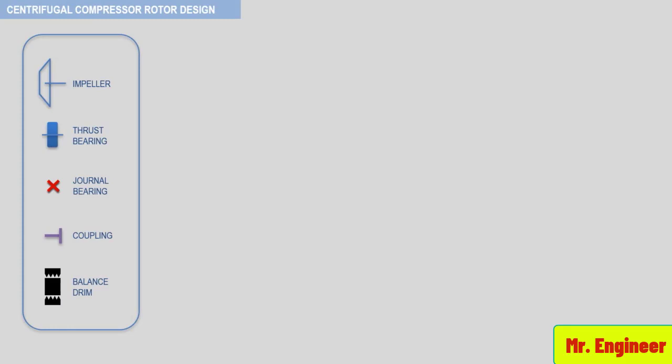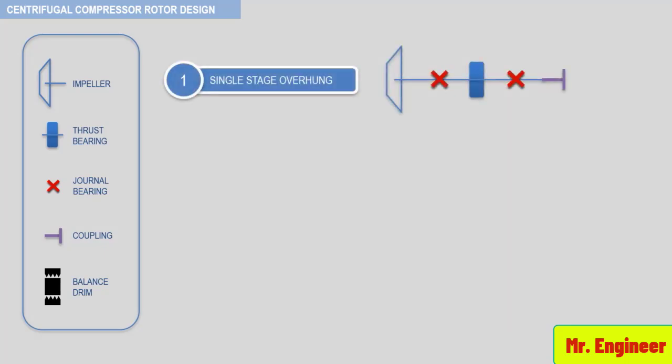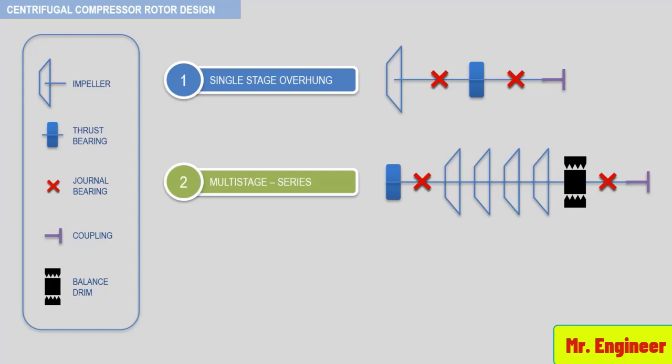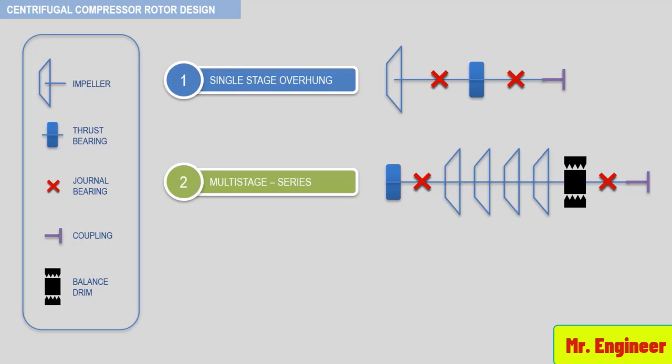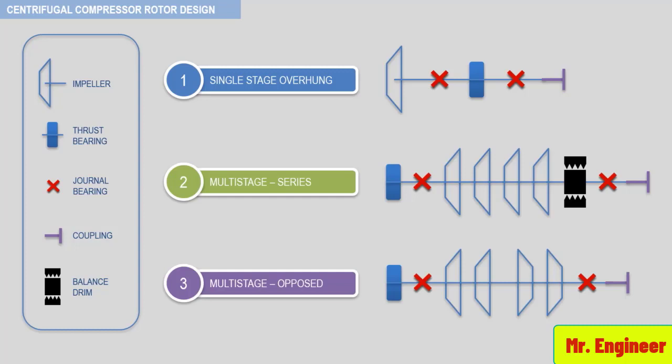There are three basic rotor configurations, and these are single-stage overhung, multi-stage series, and multi-stage opposed arrangements, as depicted here. Usually, single-stage overhung and multi-stage opposed arrangements do not incorporate a balanced drum, since the rotor thrust values are low enough to be accommodated by a thrust bearing.